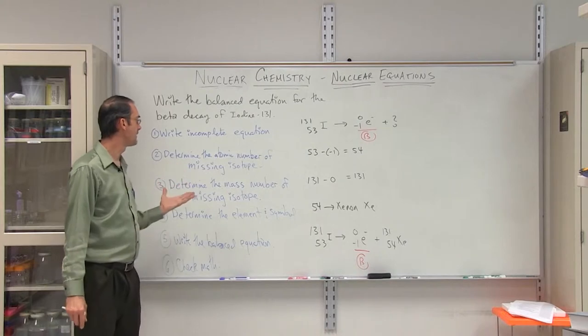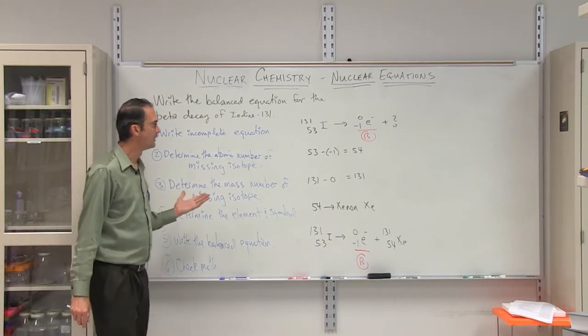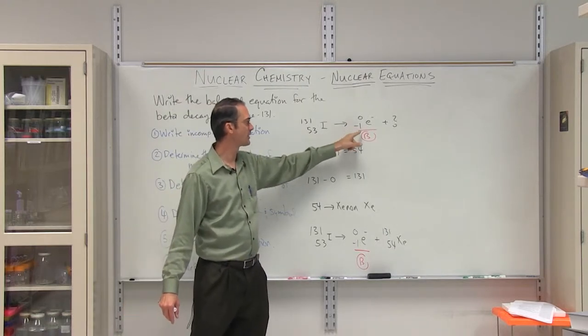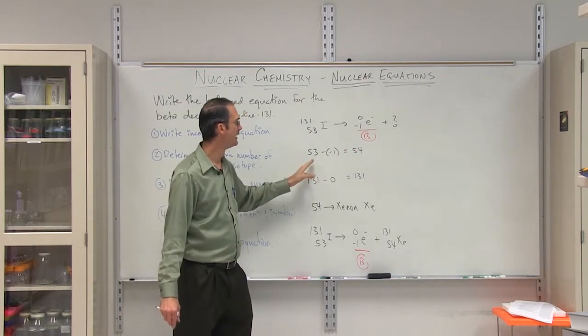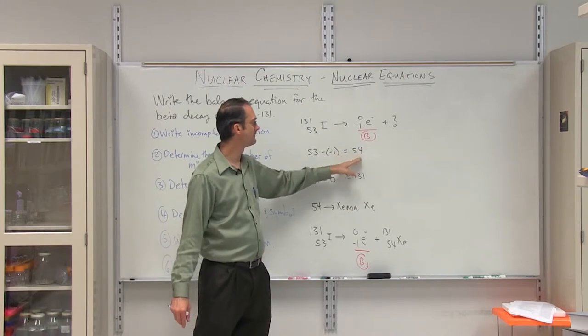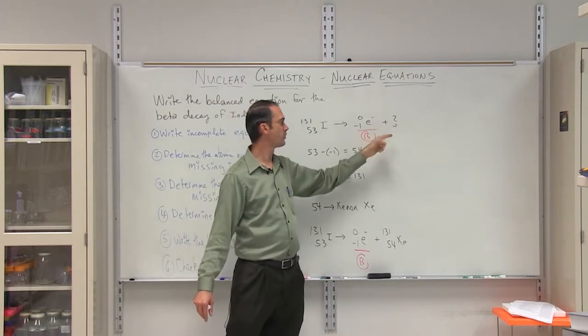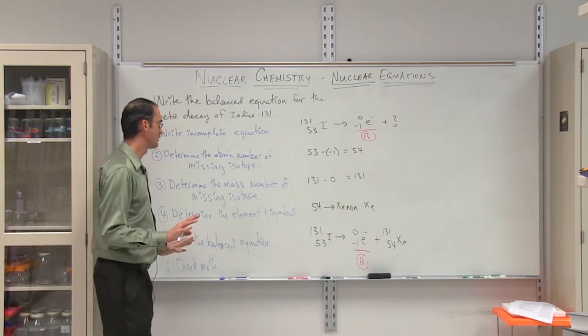Second step is to determine the atomic number of the missing isotope. Well, if we begin with a charge of 53 plus, and we come over here, we have to subtract the product, which is a negative 1. 53 minus a negative 1 is 54. So on the left, we'll have 53. On the right, we'll have 54 minus 1, which is 53 as well. That conserves the charge.